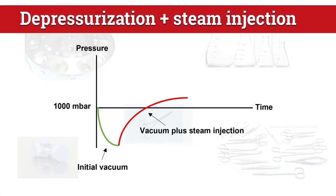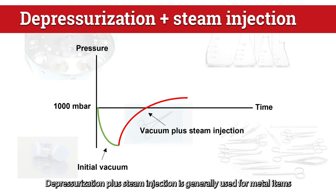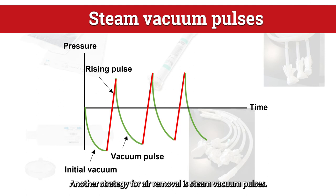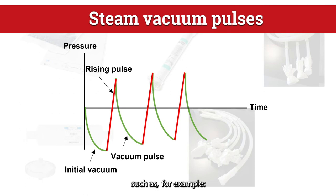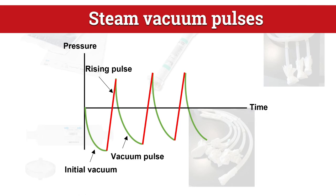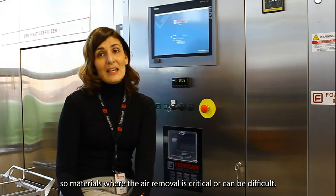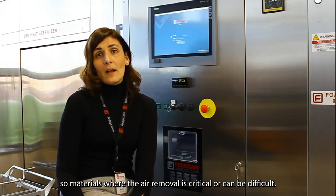Pressurization plus steam injection is generally used for metal items and open glassware. Another strategy for air removal is steam vacuum pulses, which is generally used for porous hard materials such as stoppers in bags, filters, and similar materials — items where air removal is critical or can be difficult.